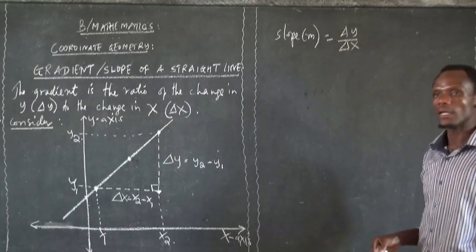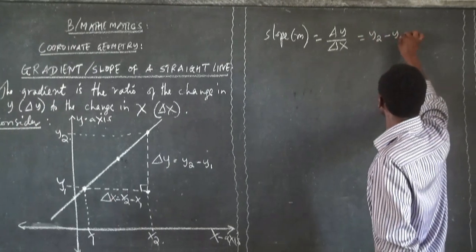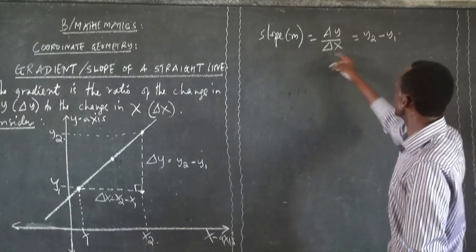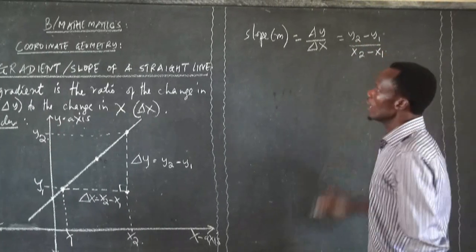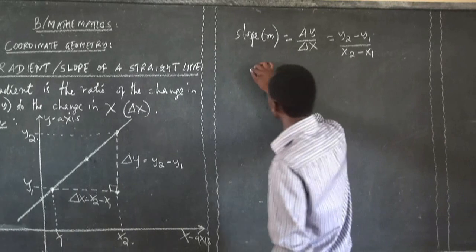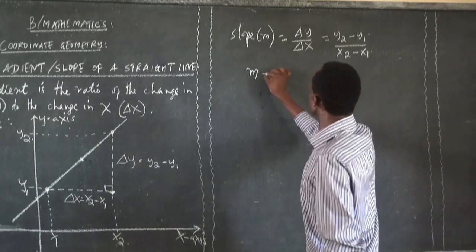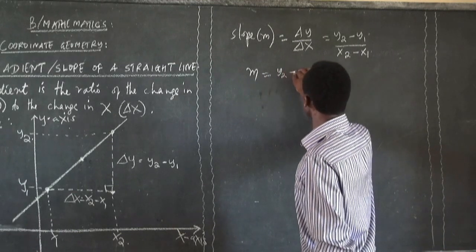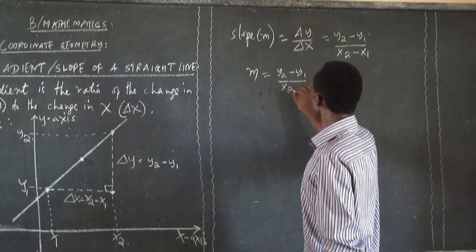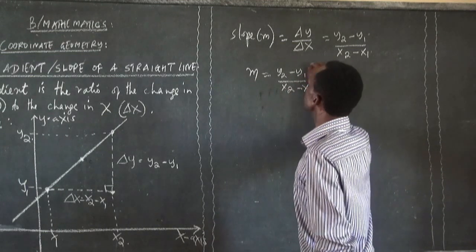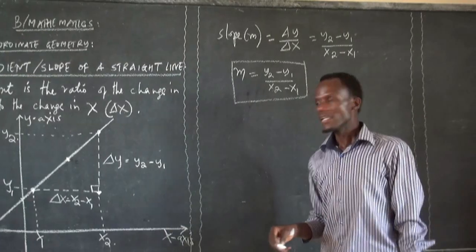Remember, change in y is equal to y2 minus y1, and change in x is equal to x2 minus x1. Therefore, slope is equal to y2 minus y1 over x2 minus x1. This is the formula that can be used to determine the slope.